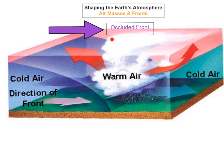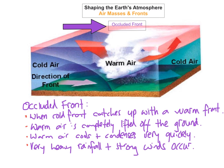The last front you need to learn is an occluded front. An occluded front is when a cold front catches up with a warm front. When it catches up, the warm air is totally lifted off the ground because of the cold air in front of and behind it. Occluded fronts give very heavy rainfall and very strong wind speeds. In summary: the cold front catches up with the warm front, the warm air is forced to rise up completely, it cools and condenses very quickly forming clouds, resulting in very heavy rainfall and very strong winds.